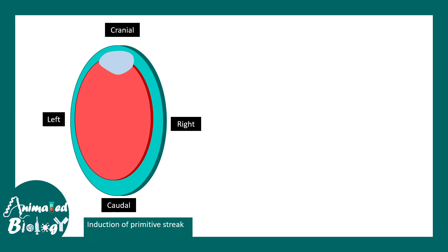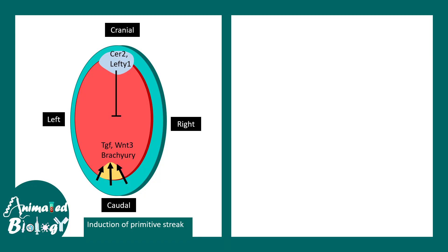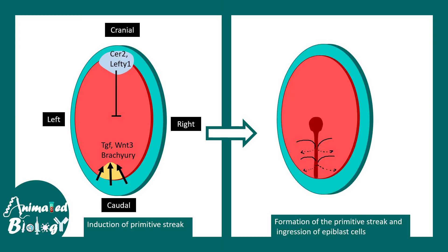Orienting ourselves towards the embryo, this is the caudal end, and there is a cranial and left-right axis. Certain signaling events allow the formation of the primitive streak. Primitive streak induction happens via activity of Wnt and TGF-beta, among others. At the cranial end, molecules counteract this Wnt activity, thereby generating a gradient. Along this gradient, a cranial-to-caudal axis is formed. This induction of the primitive streak triggers the process of ingression.